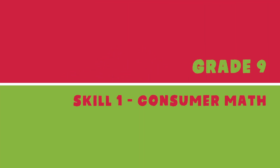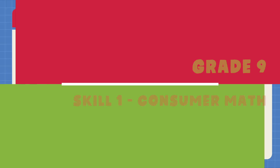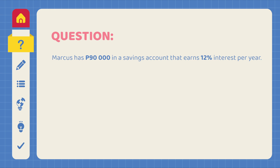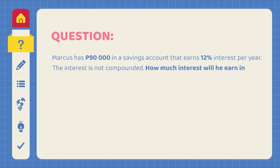Consumer math. Marcus has 90,000 pesos in a savings account that earns 12% interest per year. The interest is not compounded. How much interest will he earn in one year?